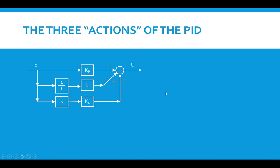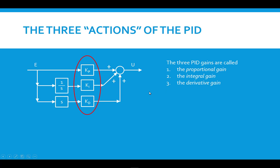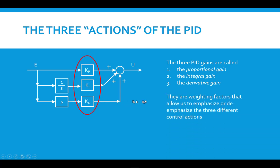The three PID gains are called the proportional gain (KP), the integral gain (KI), and the derivative gain (KD). They serve as weighting factors that allow us to emphasize or deemphasize the three different control actions. If you make KP very large and KI and KD small, you're emphasizing the proportional action; make KI big and the other two small, you're emphasizing the integral action; and the same applies to KD. With these three gains, we can independently control the contribution each action has to the total command signal going to the actuator.